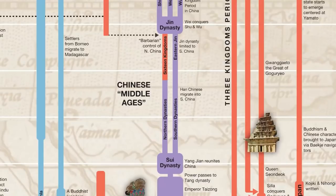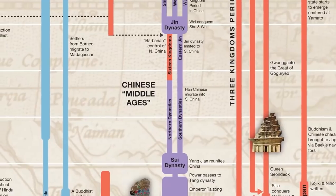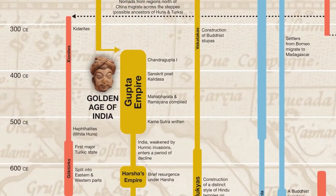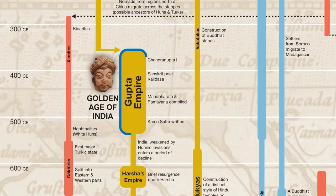Interestingly, it was during the Chinese Middle Ages, when China was experiencing a bit of a low point, that India experienced one of its major high points — with the emergence of the Gupta Empire. The Gupta Empire was the golden age of Hindu literature. This is when the famous epics the Mahabharata and the Ramayana were compiled into the versions we know today.